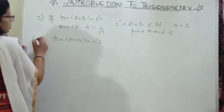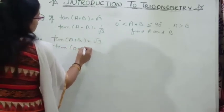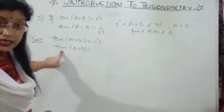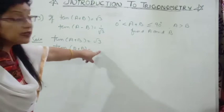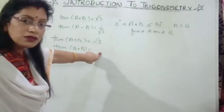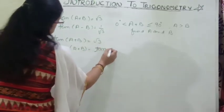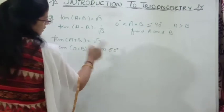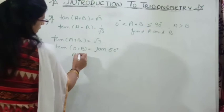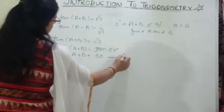Solution: for tan(A+B) = √3, write √3 in tan form. Tan 60° = √3. So in place of √3 we can write tan 60°. Tan cancels tan, so we get A+B = 60°. This is equation number 1. For tan(A−B) = 1/√3, write in tan form: tan 30° = 1/√3. So A−B = 30°. This is equation number 2.